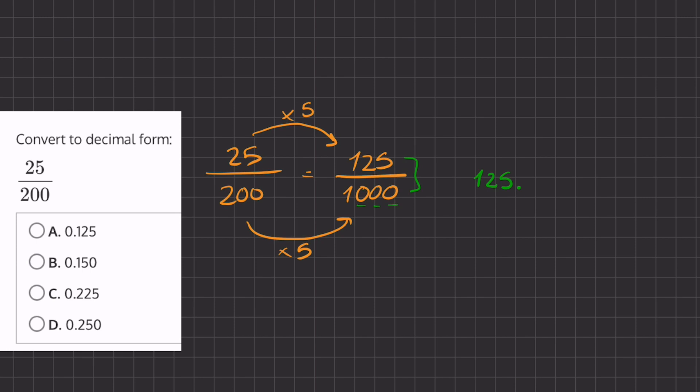So because we have 3 zeros after the 1, we're going to move this decimal place 3 times to the left. So our decimal is actually going to be 0.125. And this 0.125 is equivalent to 25 divided by 200.